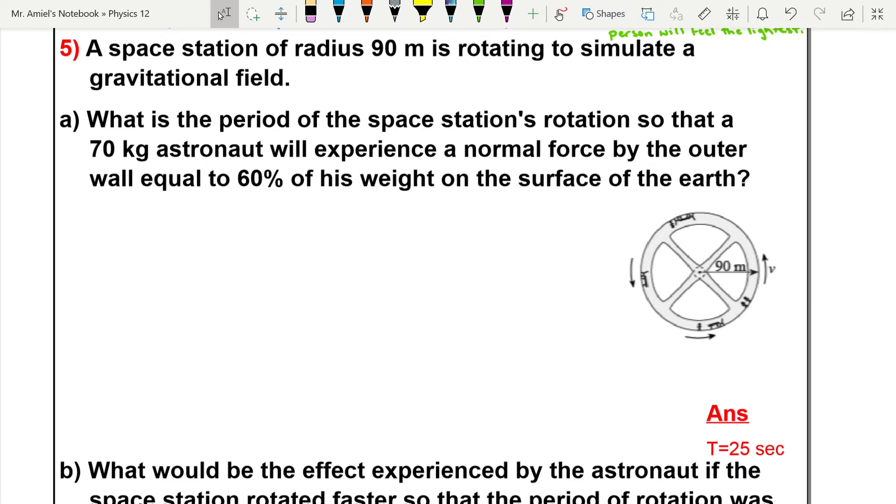All right, we're going to have a look at question five here, and there's actually quite a lot going on. So we're going to start off by redrawing our free body diagram here. We've got our circle, and the only force that's going to be acting on our person is going to be this normal force caused by the spinning at the station.